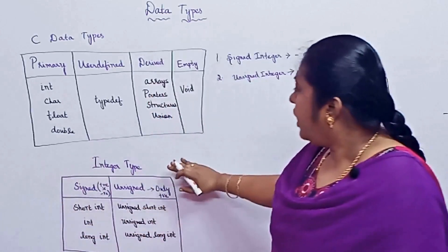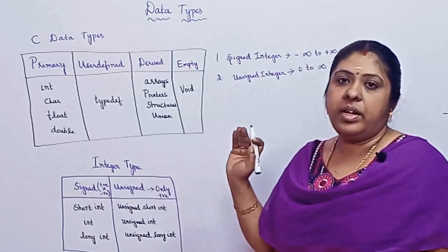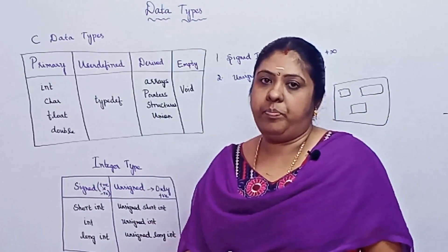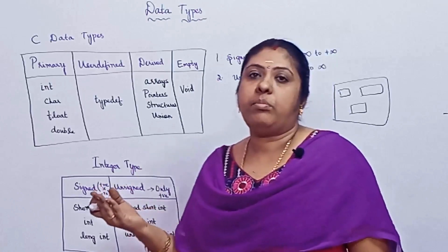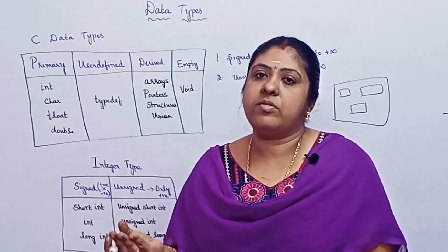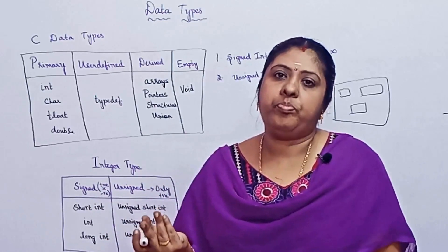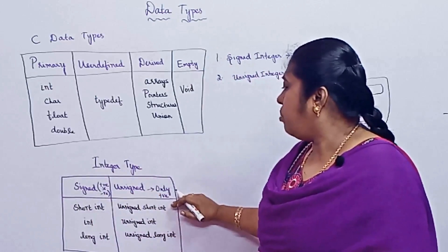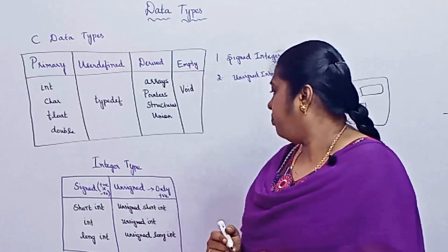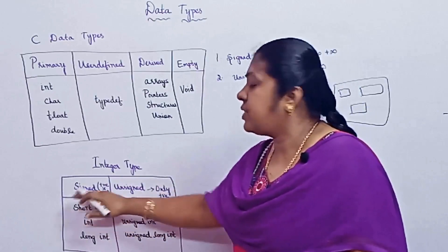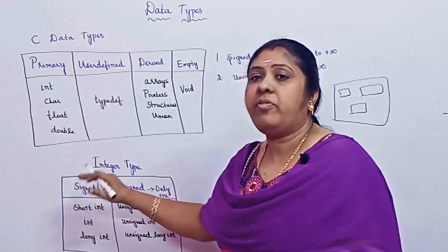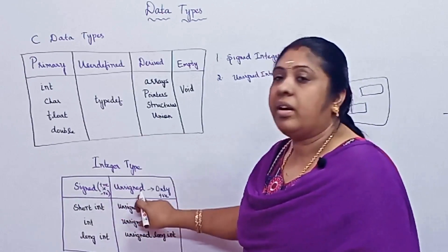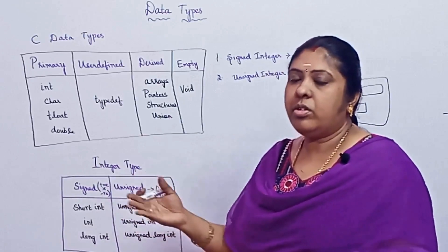In the integer data type we have signed integer and unsigned integer. A signed integer consists of both positive and negative numbers — for example, +10 and −10. An unsigned integer consists of only positive numbers. You may wonder: if signed can represent both, what is the need for unsigned? That difference relates to how range is distributed.